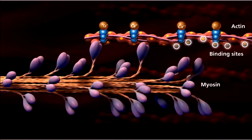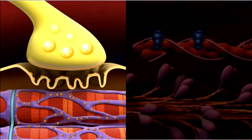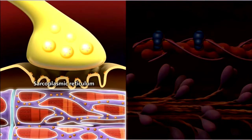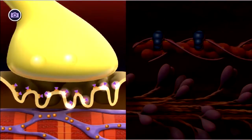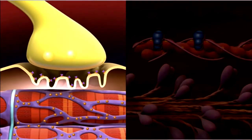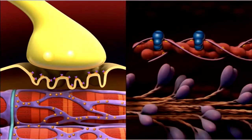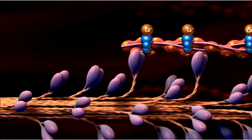This allows myosin to attach to a binding site on actin, forming a cross-bridge. Calcium ions are stored in the sarcoplasmic reticulum and are released in response to signals from the nervous system to contract. Neurotransmitter molecules are released from a neuron and bind to receptors, which depolarizes the membrane of the muscle fiber. The electrical impulse travels down the T-tubules and opens calcium stores, and calcium ions flow to the myofibrils where they trigger a muscle contraction.